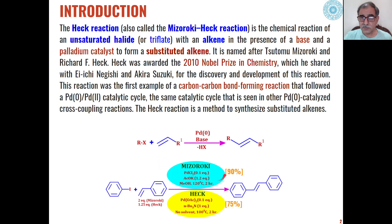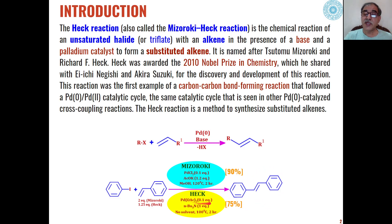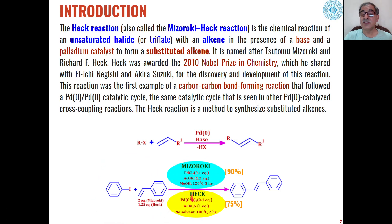In the case of Mizoroki, he used palladium chloride and potassium acetate in methanol at 120 degrees centigrade to study the reaction of styrene with phenyl iodide, obtaining trans-alkenes as product. Heck used palladium acetate in the presence of tri-tert-butylamine as base along with palladium, and performed the reaction under solventless conditions at 100 degrees centigrade. Both scientists studied the same reaction and obtained the same product under different conditions: Mizoroki obtained 90% yield whereas Heck obtained 75% yield.